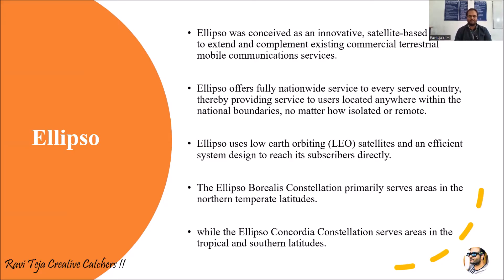Ellipso works for telecommunication services and uses low earth orbit (LEO) satellites, communicating directly with subscribers. There are two types of Ellipso constellation: the Ellipso Borealis constellation, which serves areas with respect to the northern temperate latitudes, and the Ellipso Concordia constellation, which serves areas with respect to the tropical and southern latitudes.